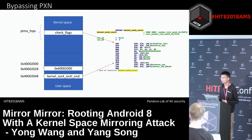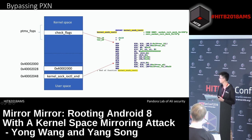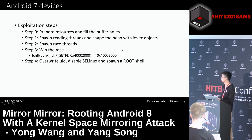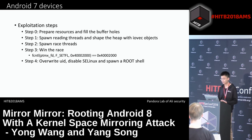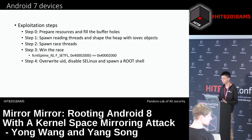A public method to bypass PXN mitigation and gain arbitrary read/write ability is hijacking the check_flags kernel pointer. Since the lower 32 bits of the X0 register are controllable, a simple JOP chain can be easily constructed. For Android 7 and lower devices, the exploitation steps are straightforward: first prepare resources like the JOP chain, pipe file descriptors, and the inotify monitor; fill the buffer holes in the heap; spawn reading threads and shape the heap with LV pipe objects; then spawn race threads and check in the main thread. If arbitrary read/write ability is gained, the last step is to overwrite UID, disable SELinux, and spawn a root shell.